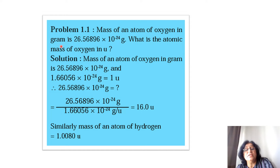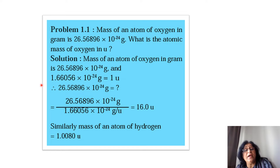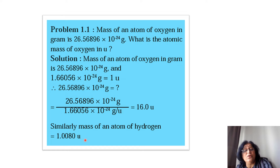The mass of 1 atom of oxygen is 26.56896 × 10⁻²⁴ grams. To find the atomic mass of oxygen in unified mass units, we divide 26.56896 × 10⁻²⁴ grams by 1.66056 × 10⁻²⁴ grams per U, which comes out to be 16 U. Similarly, the mass of one hydrogen atom comes out to be 1.0080 U.